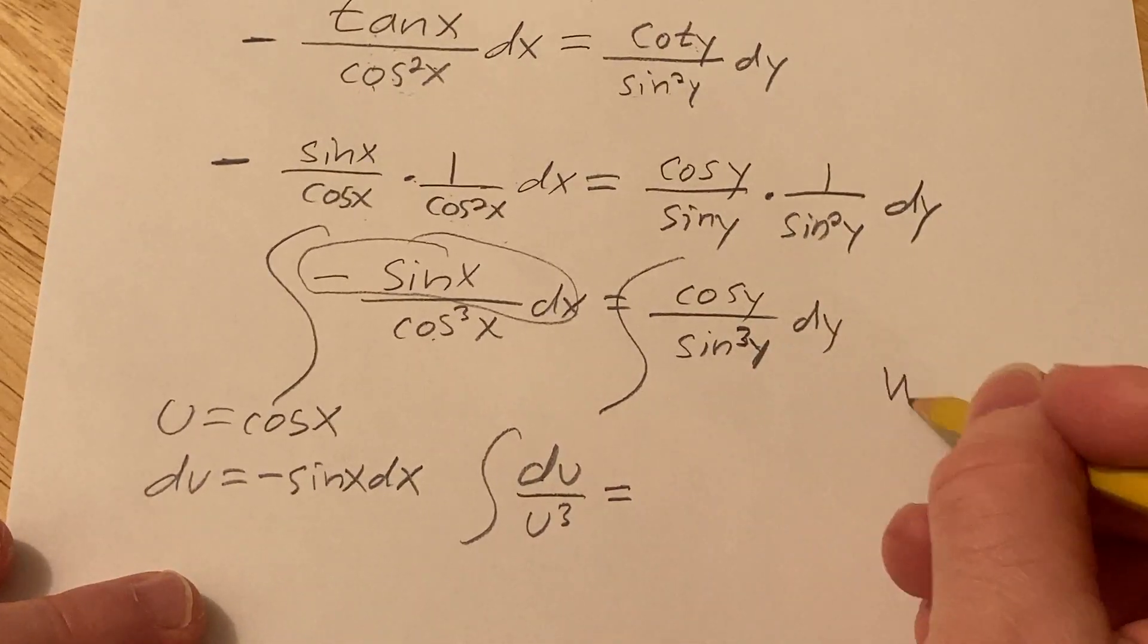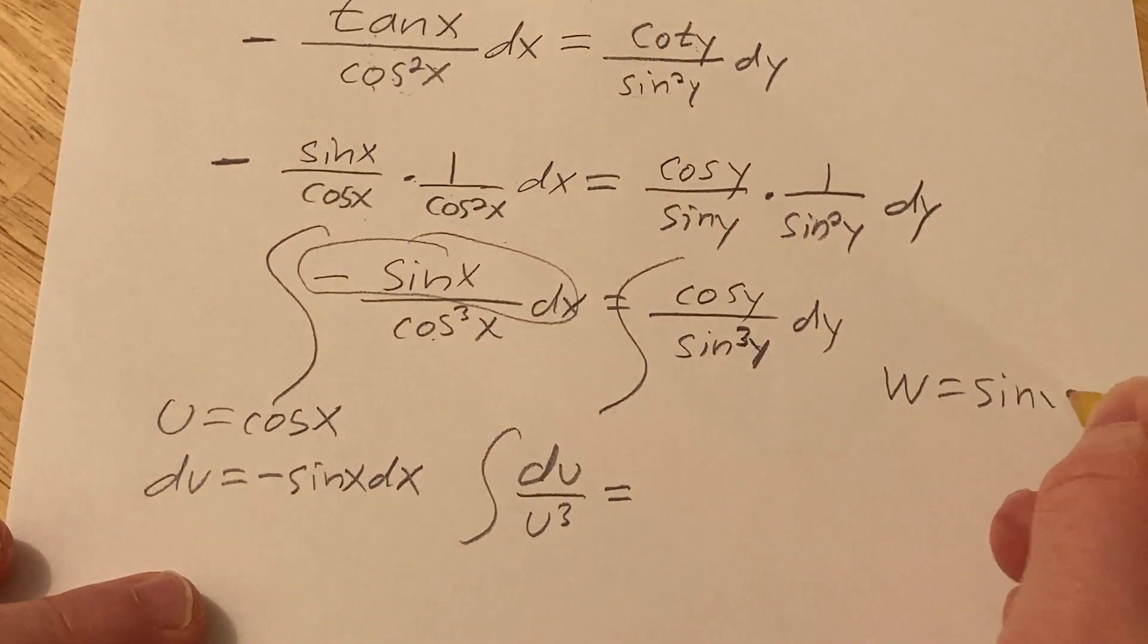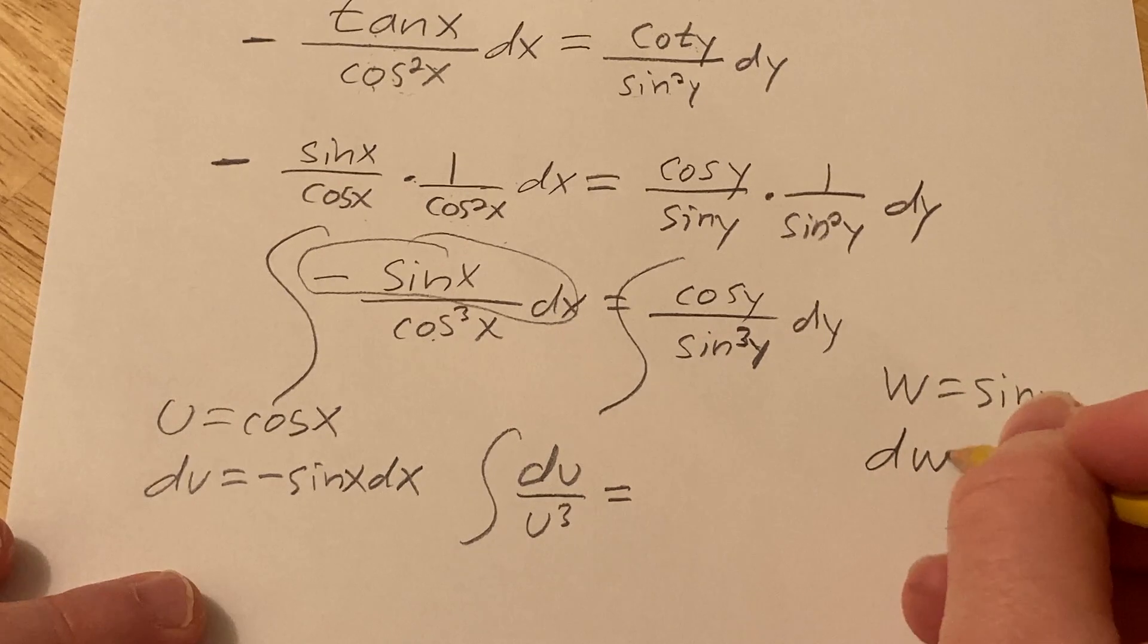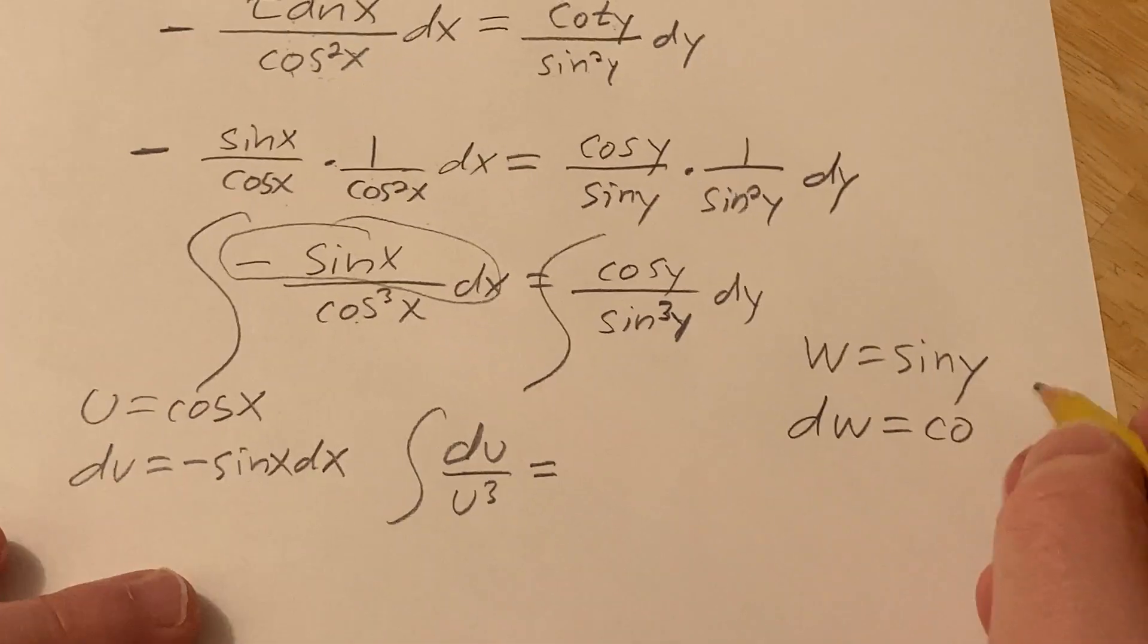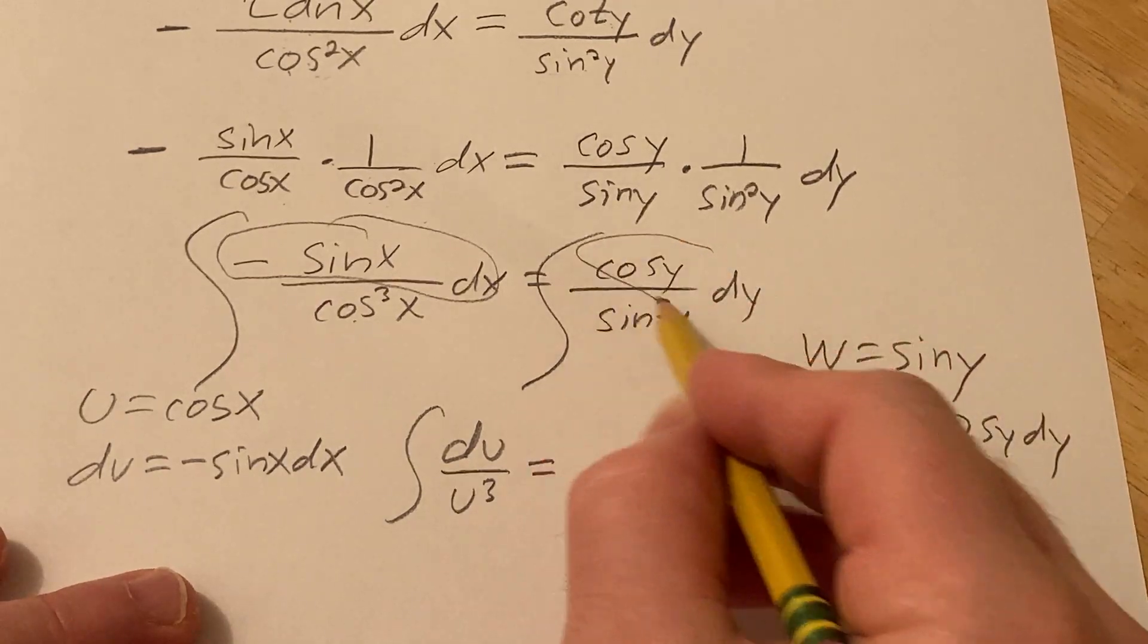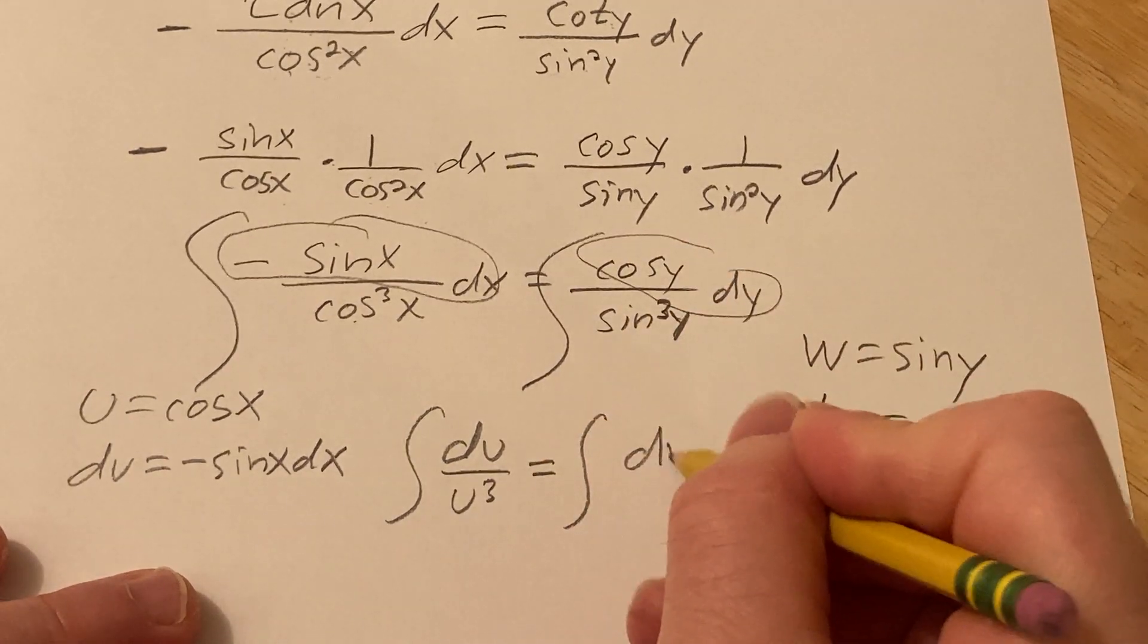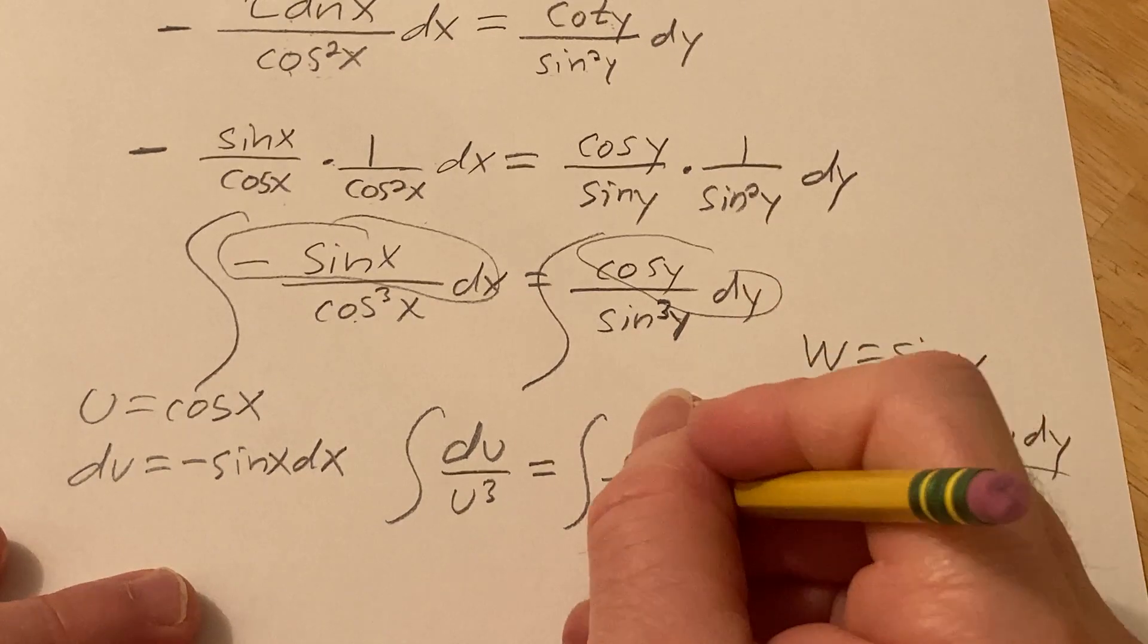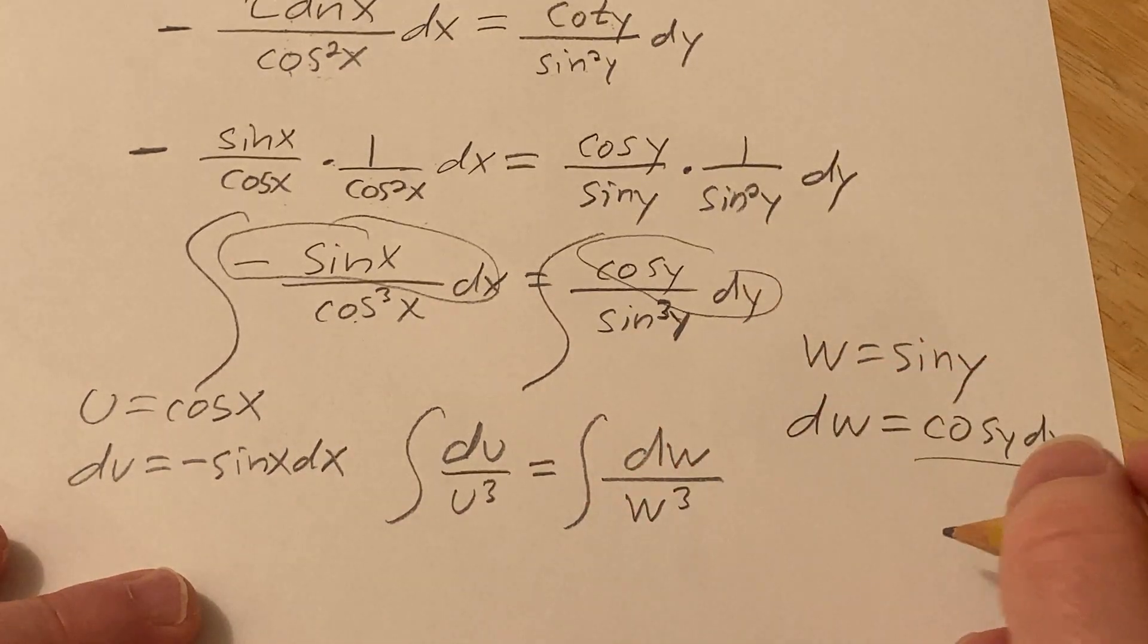Over here I'll let w equal the sine of y, so then dw is simply cosine y dy, and so all of that is here. So this is going to be dw over w cubed. Really nice.